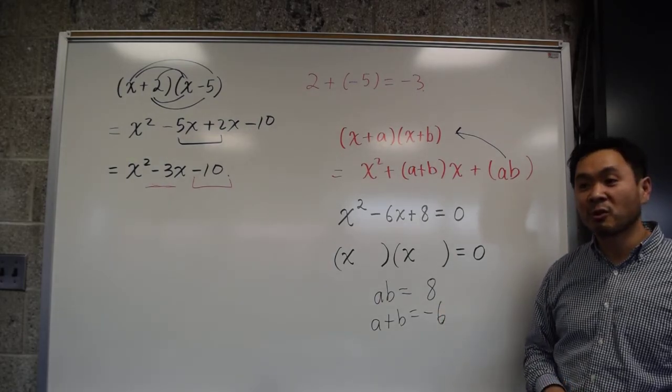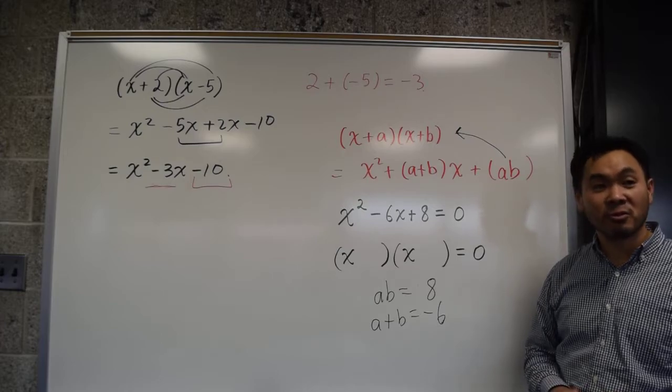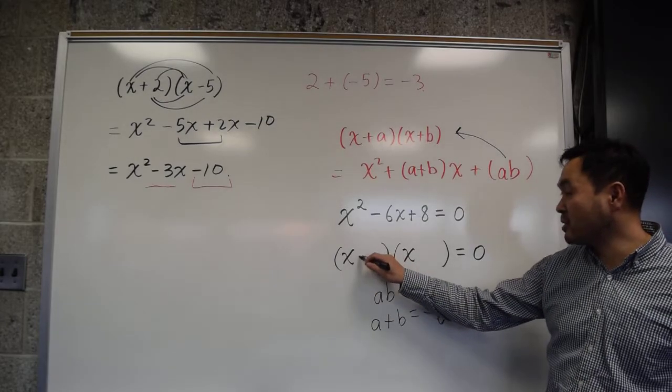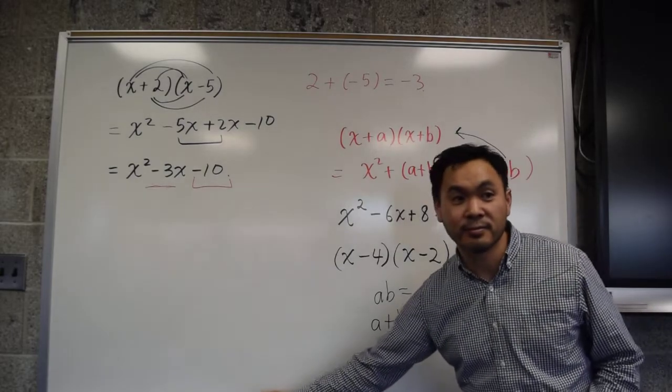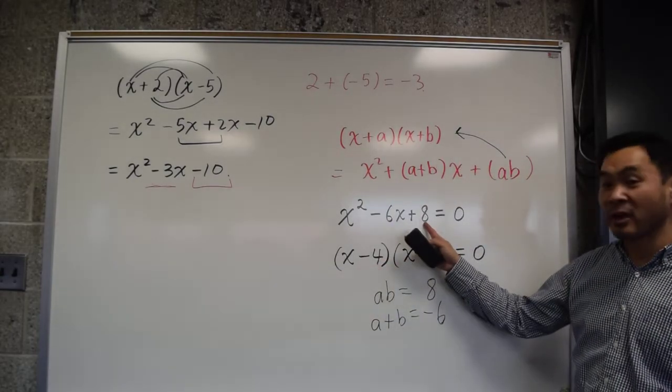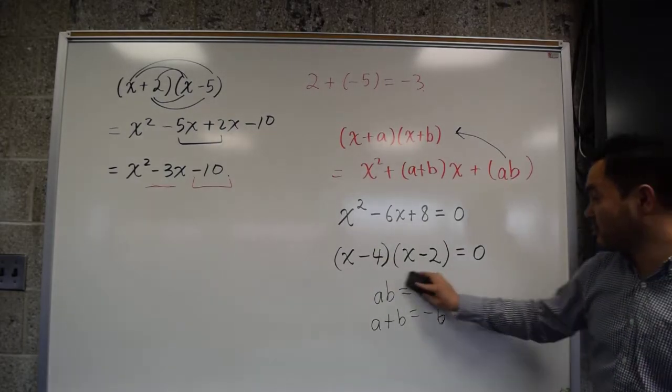So, we know that they should be both negative. 8, what two numbers multiply to 8? -2 and -4. -2 and -4, then you add up to -6, right? So, now you see that it should be -4 here and -2 there. And this product gives you 8. The sum gives you -6. Perfect. It works.